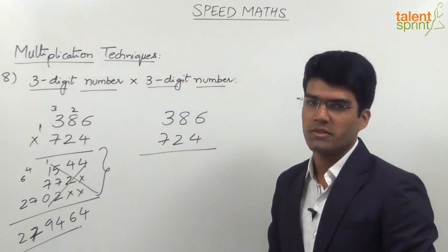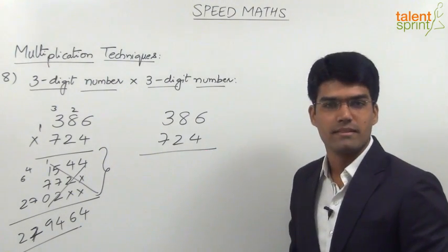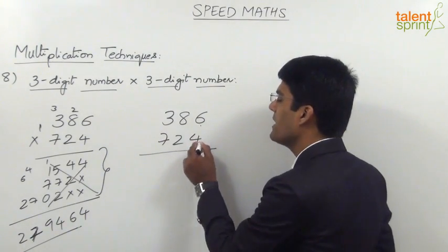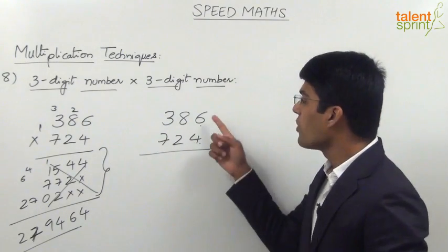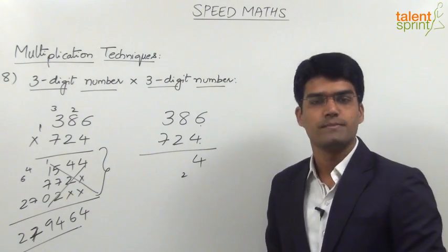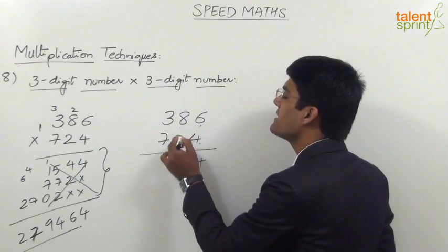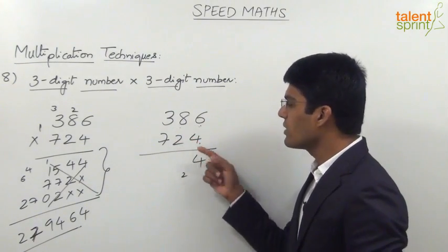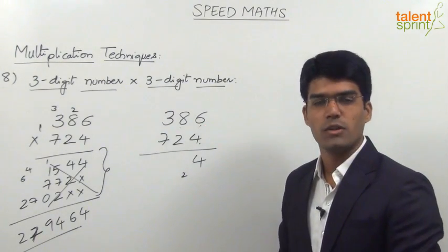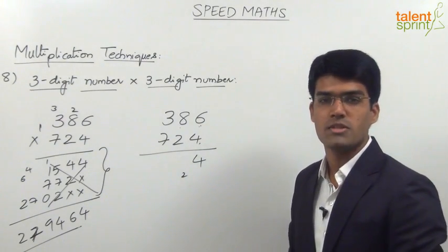The first step is to multiply the unit places, same as in two-digit multiplication: 4 into 6 is 24, so 4 is in the answer and 2 gets carried forward. The second step is to cross multiply unit places with tens places: 8 into 4 is 32, and 2 into 6 is 12; 32 plus 12 is 44.